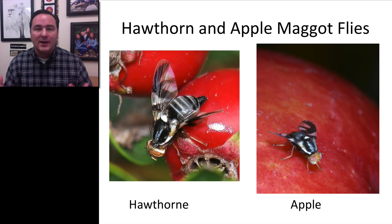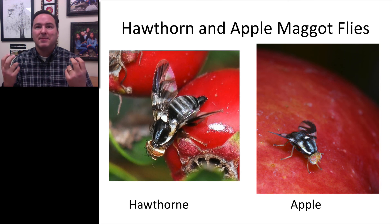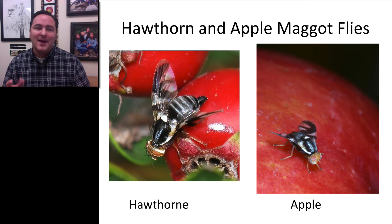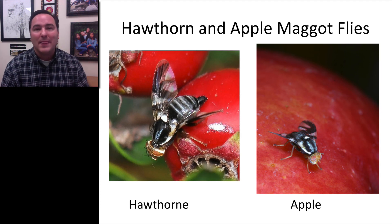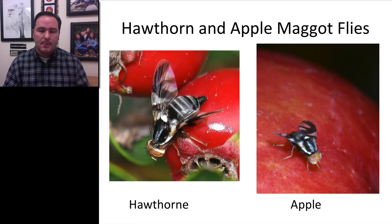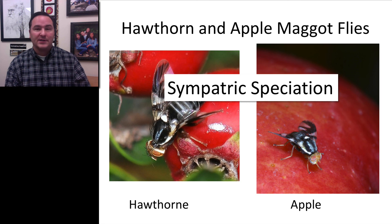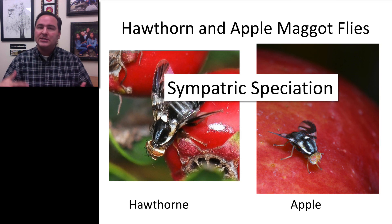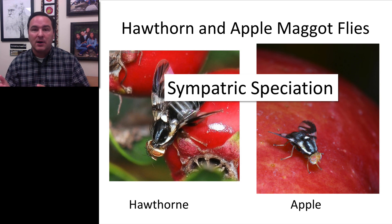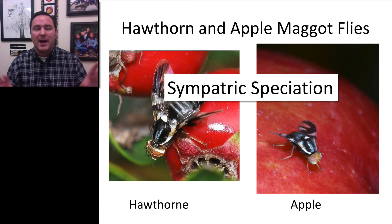We can actually identify specific mutations in the genes that help these flies smell when fruit is ripe, and we've seen different mutations in each population on the gene that determines when they should lay their eggs — a really interesting study. This is sympatric speciation. That's an introduction to speciation: the concepts that help us define species, the mechanisms involved, and the two modes of speciation — allopatric and sympatric.